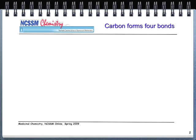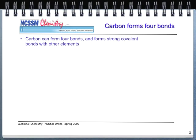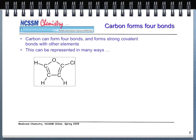By now you should know the following things. You should understand that carbon forms four bonds — and it forms four bonds all the time — and it can also form strong covalent bonds with other elements. We can represent this in many ways.